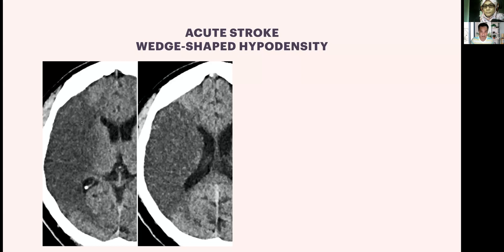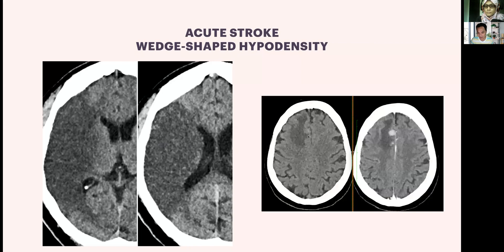When you see hypodensity limited to white matter only, not involving gray matter, and contrast enhancement reveals an enhancing mass — that is vasogenic edema from a tumor, not an infarct. The key take-home message: large infarcts involve both gray and white matter. I personally made this mistake once when I was an HO in Klang — I referred a patient to HKL for a large infarct, but it turned out to be a tumor causing vasogenic edema.